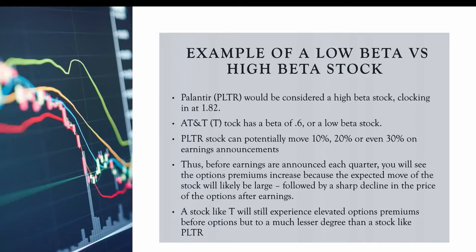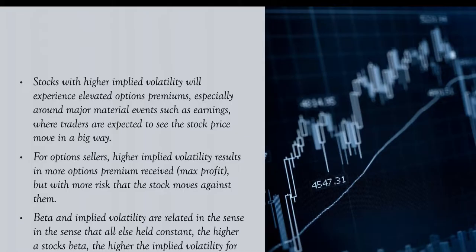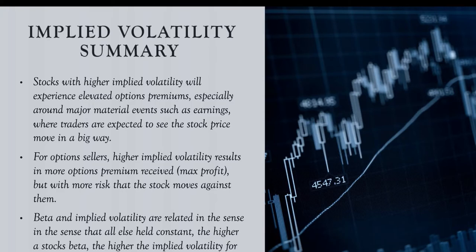A stock like AT&T will still experience elevated options premiums before earnings, but to a much lesser degree than a stock like Palantir. It all comes down to the beta — that's tied in with implied volatility and how volatile that stock is. But you're still going to have elevated options premiums for a stock like AT&T, Verizon, or Procter & Gamble before earnings, even though those are lower volatility or lower beta stocks. Earnings are just one example — it could be any expected news event and you'll see that elevated implied volatility.